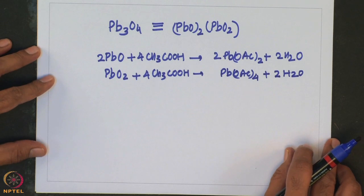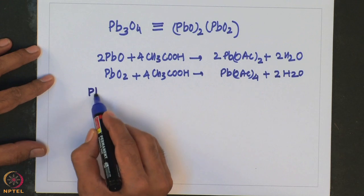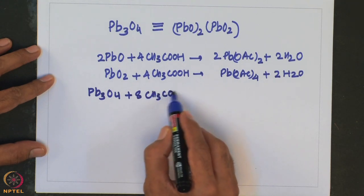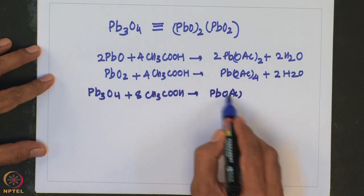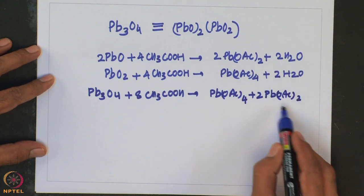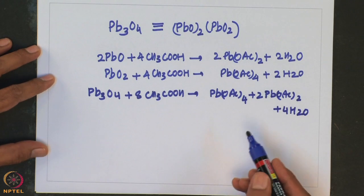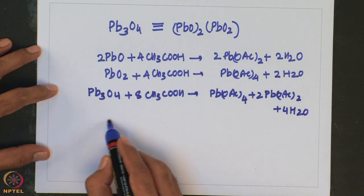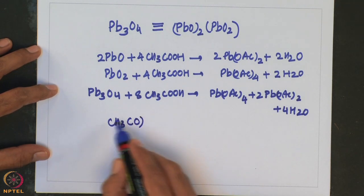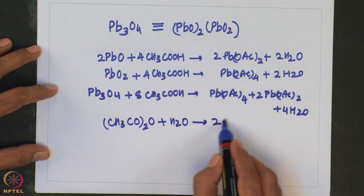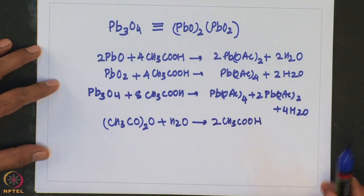The overall reaction is: Pb3O4 + 8 CH3COOH → 2 Pb(OAc)2 + Pb(OAc)4 + 4 H2O. This is obtained by adding the two sub-reactions together. The role of acetic anhydride is to abstract the water produced and prevent the back reaction, so the appropriate amount of acetic anhydride must be added.